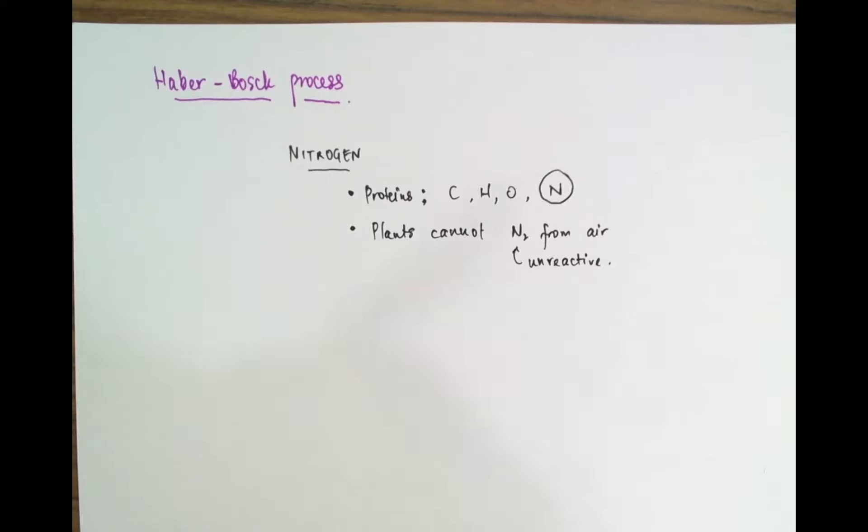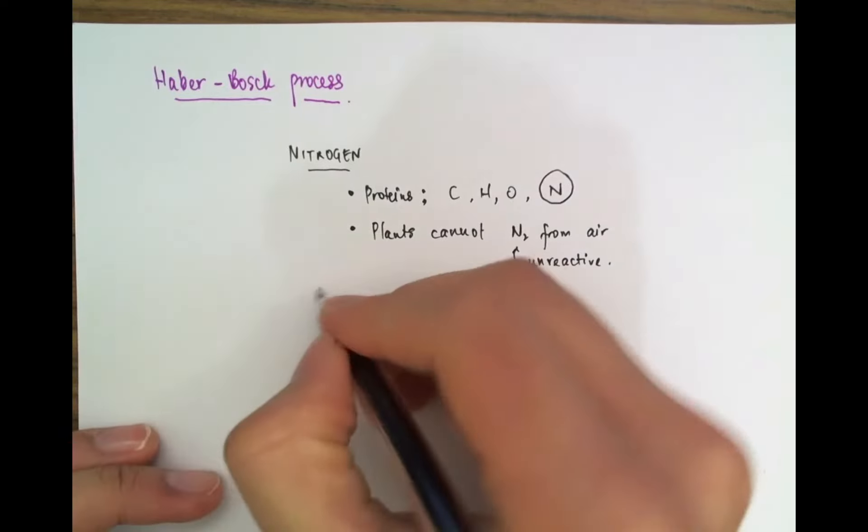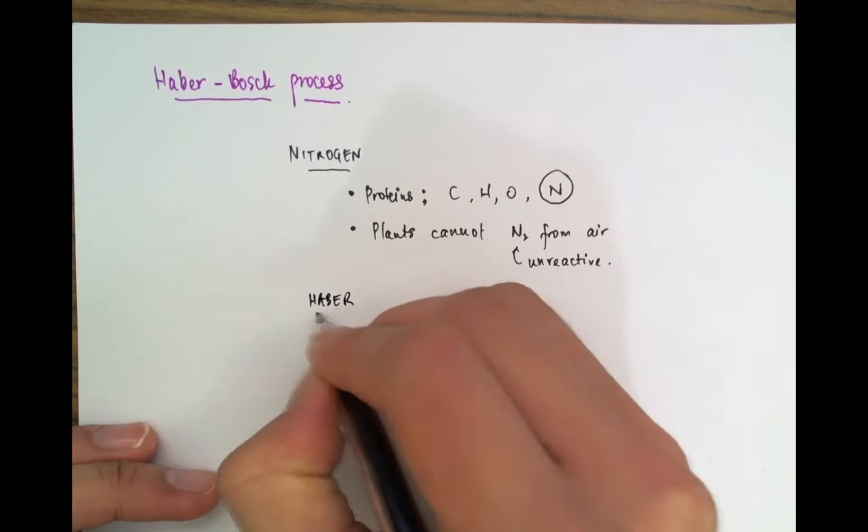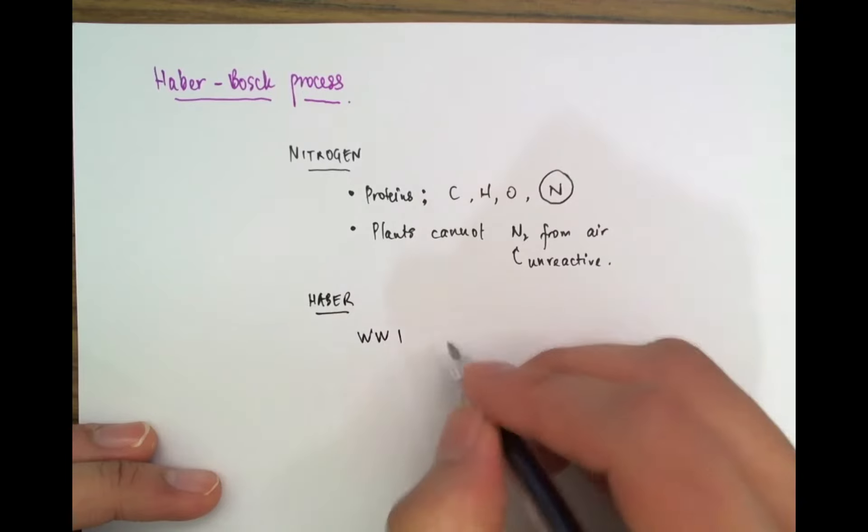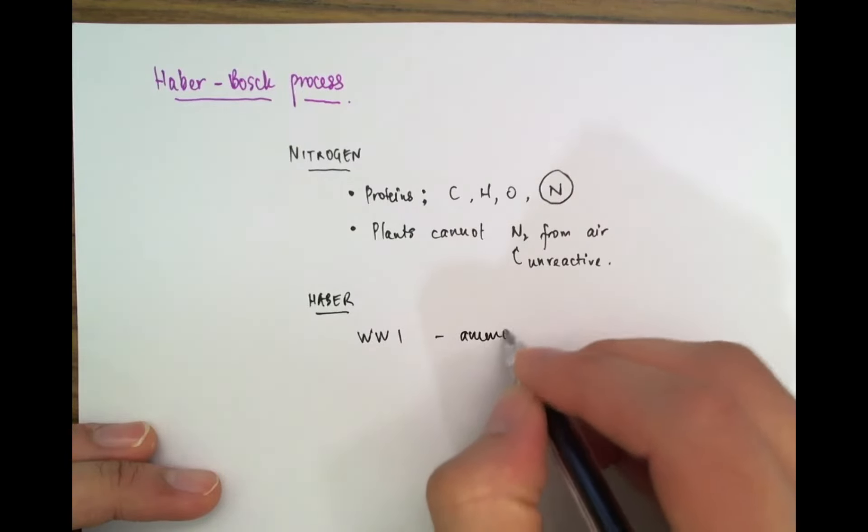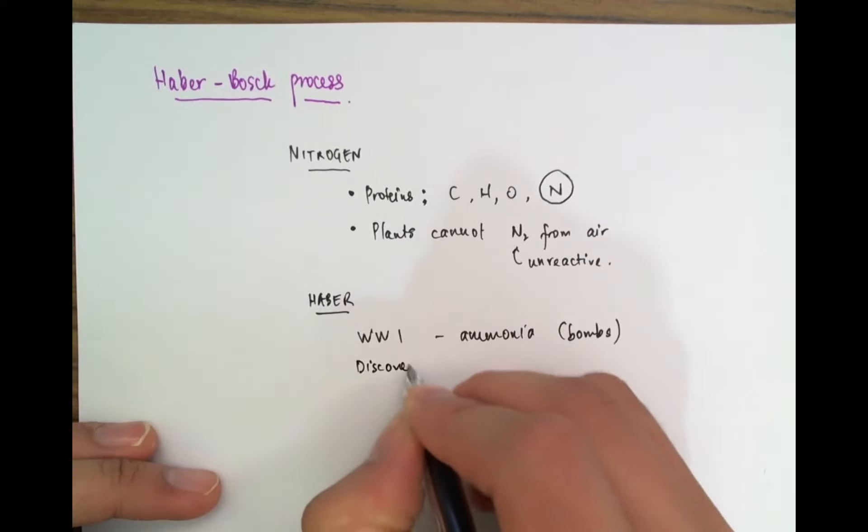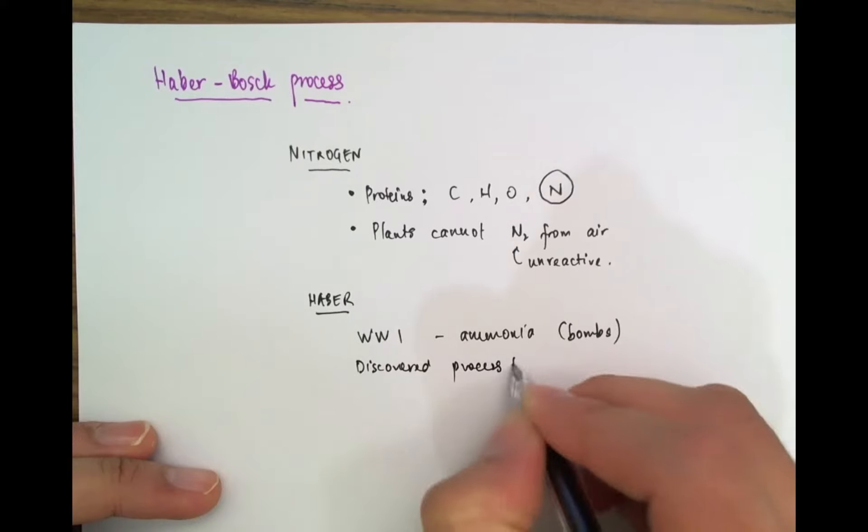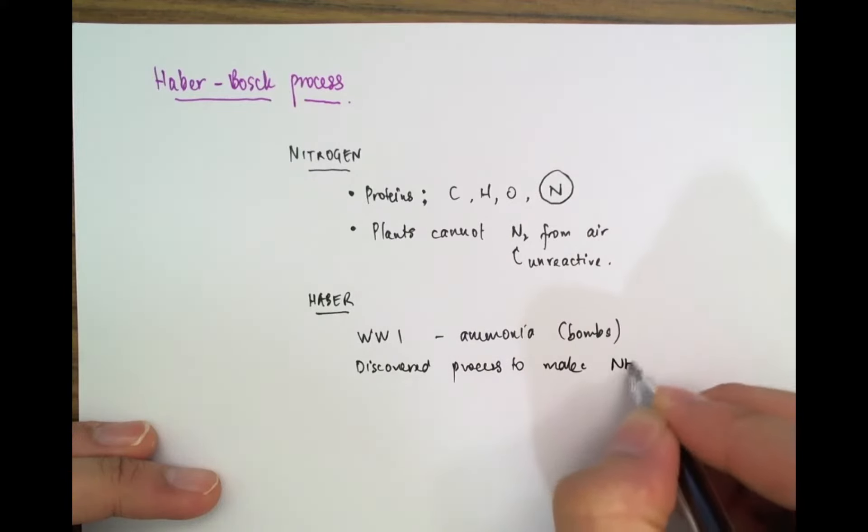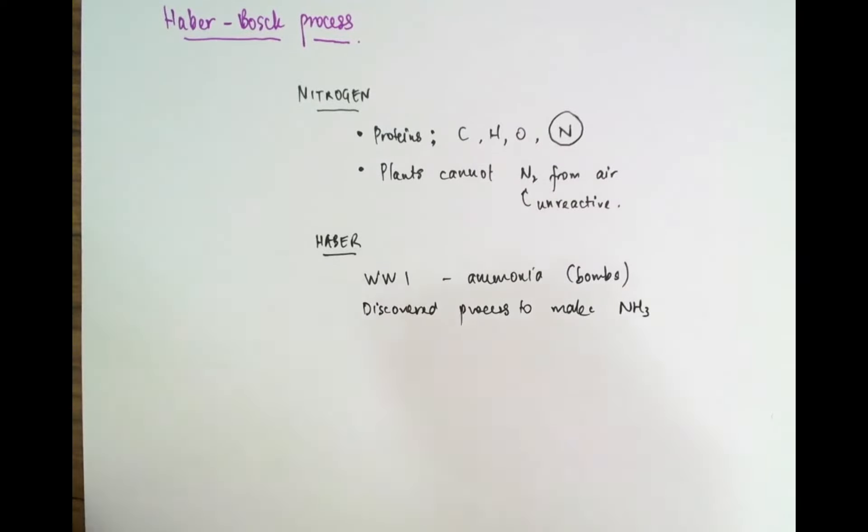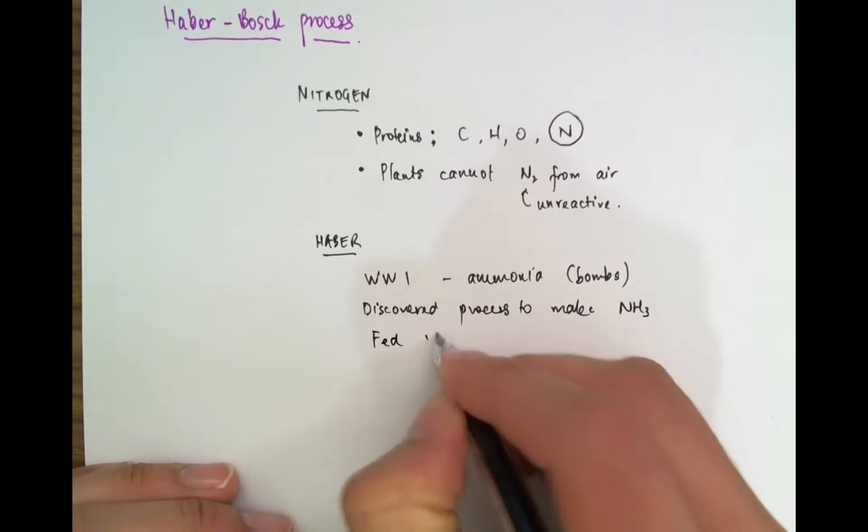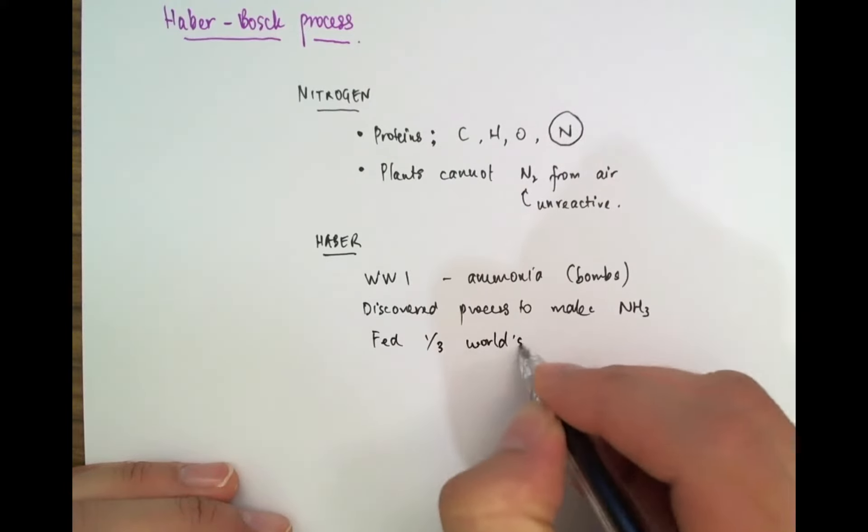So it needs to be converted into some other form such as ammonia before it can be absorbed. So the Haber process is basically a process of making ammonia and it was discovered by Fritz Haber. It's World War I and they needed ammonia not to feed people but to make bombs. So he discovered this process to make ammonia and make lots of bombs. But in the process he fed a third of the world's population nitrogen.